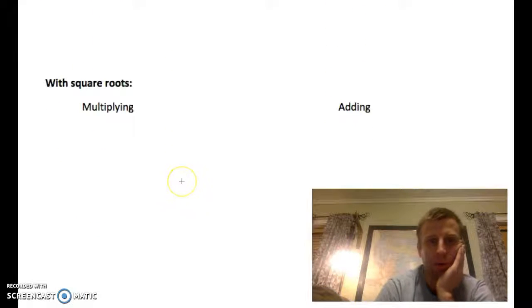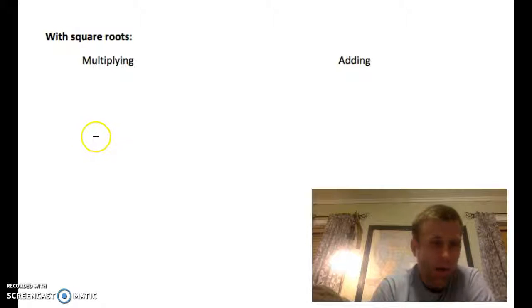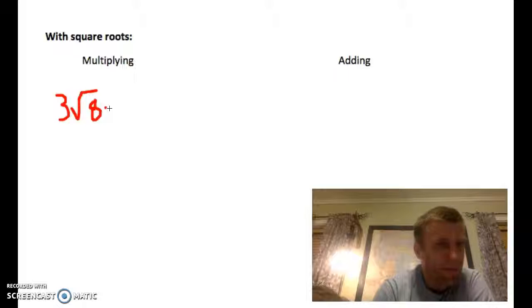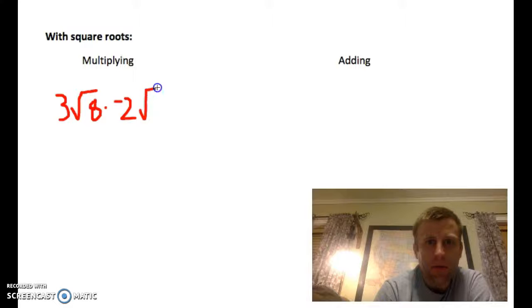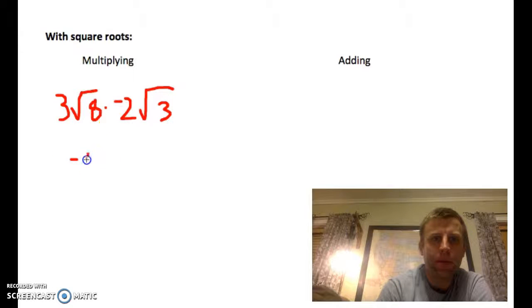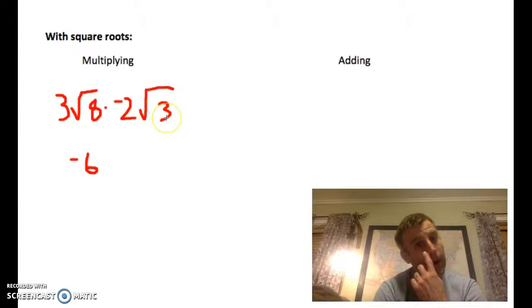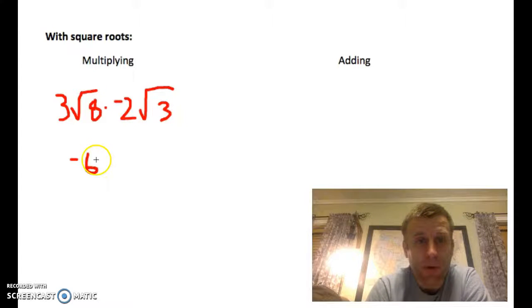So, just trying to make the connection here to what you can do with radicals. This is the new stuff right here, with square roots. So, multiplying, you can multiply any radicals together. Three square root of eight, times negative two square root of three. We can multiply together the whole number parts. So, you can do the three times negative two. And then, you can also multiply together the radical parts. So, square root of twenty-four.